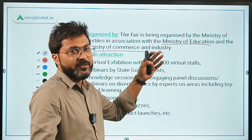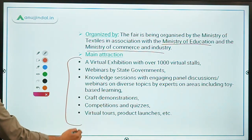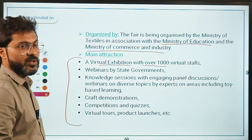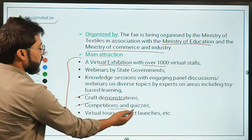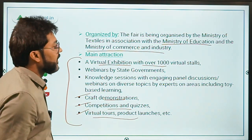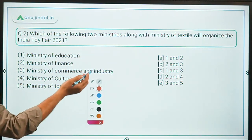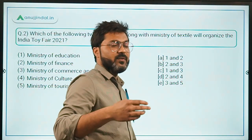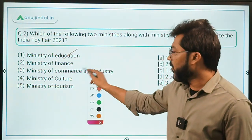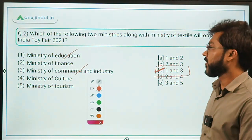The organizing ministries are the Ministry of Textiles, Ministry of Education, and Ministry of Commerce and Industry. Main attractions during this event include a virtual exhibition with over 1,000 virtual stalls, craft demonstrations, competitions and quizzes, virtual tours, and product launches. So the two ministries along with the Ministry of Textiles are the Ministry of Education and the Ministry of Commerce and Industry — meaning option C, statements one and three, is the correct answer.